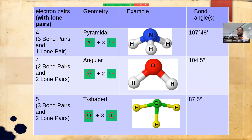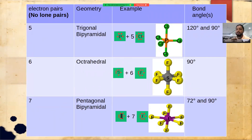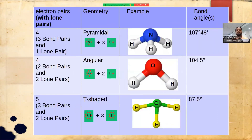Now consider ClF₃: chlorine has seven electrons in its valence shell. Three electrons are shared with three fluorine atoms, leaving 7 − 3 = 4 electrons, which form two lone pairs. So we have three bond pairs and two lone pairs. If all five were bond pairs, the shape would be trigonal bipyramidal; but the two lone pairs occupy the equatorial positions of the trigonal bipyramid, giving a T-shaped molecule. The bond angle is close to 90 degrees but not exactly — it is 87.5 degrees.